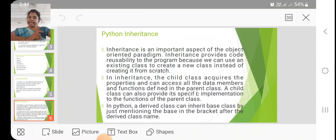Next is Python inheritance. Inheritance is nothing but inheriting something from the above object. Inheritance provides code reusability to the program because we can use an existing class to create a new class instead of creating it from scratch. The child class acquires the properties and can access all the data members and functions defined in the parent class. A child class can also provide its specific implementation to the functions of the parent class.